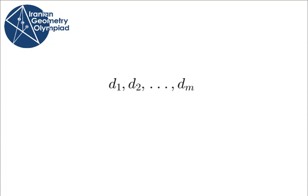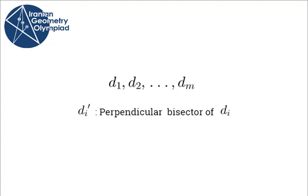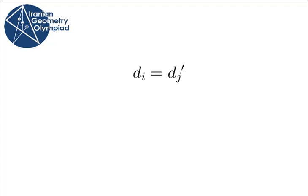Let me denote the perpendicular bisector of d_i by d_i prime. We know that for every i, d_i must equal d_j prime for at least one j, because every diagonal is the perpendicular bisector of at least one other diagonal.